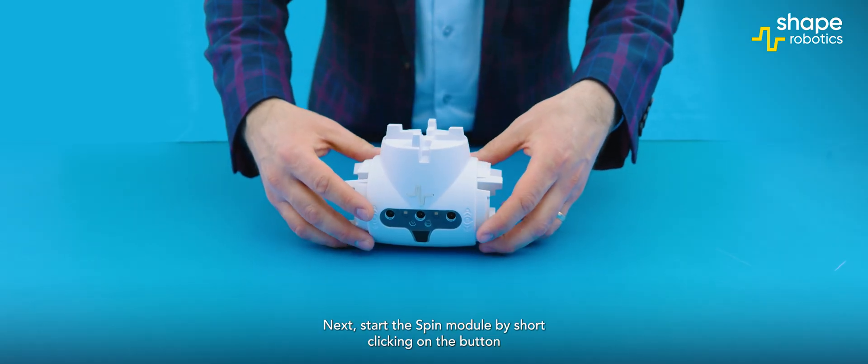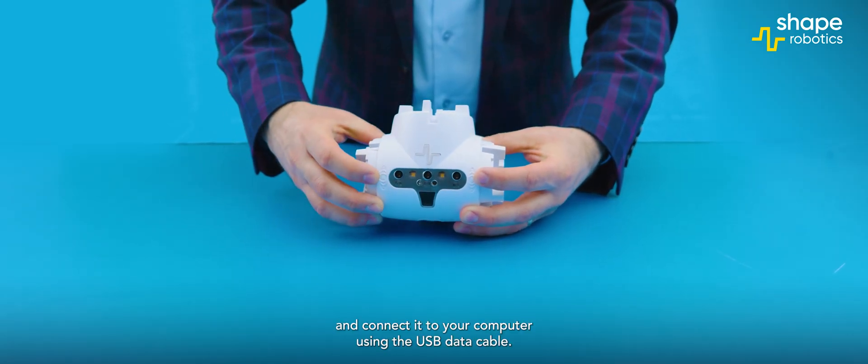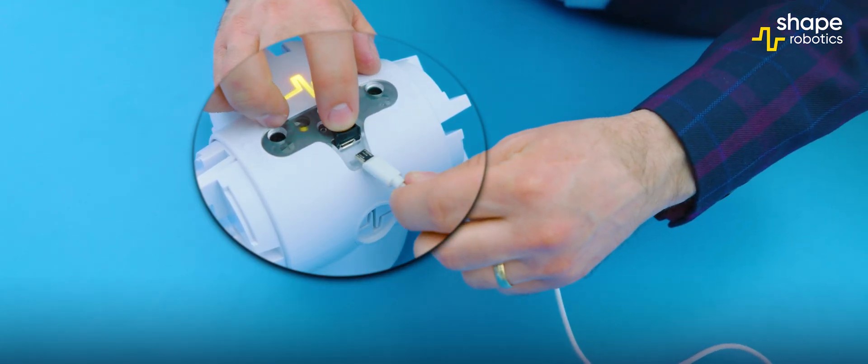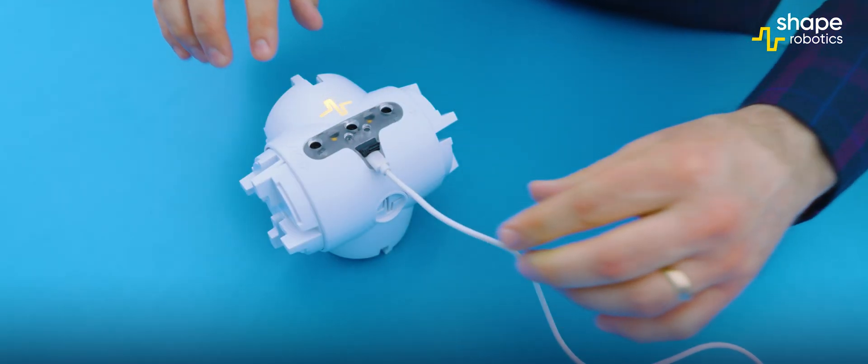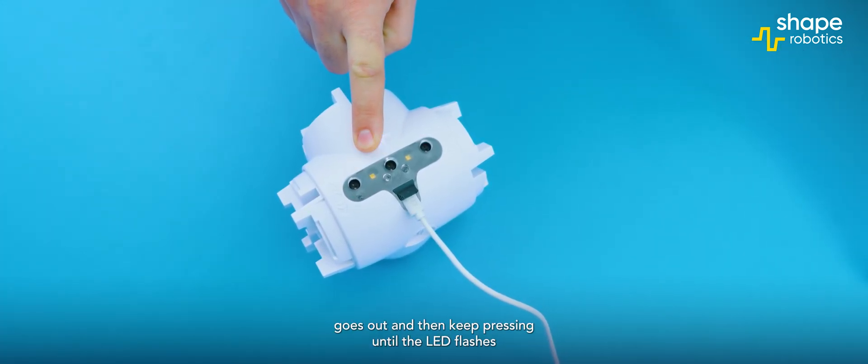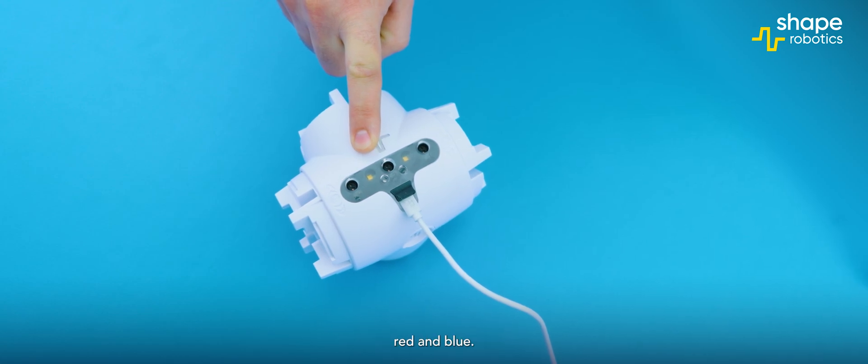Next, start the spin module by short-clicking on the button and connect it to your computer using a USB data cable. Press and hold the button until the LED goes out, then keep pressing until the LED flashes red and blue.